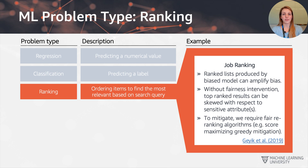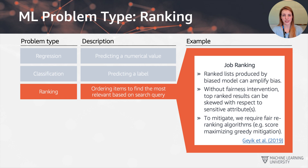The next example is ranking, where we want to order items to find the most relevant based on a user search query. An example of this would be job ranking, where ranked lists may amplify bias further — you're going to look at the top ranked results first, and those end up getting more likes and more views, which can reinforce any bias that is already present. Without fairness intervention, top ranked results can be skewed with respect to different sensitive attributes.